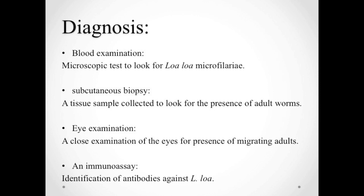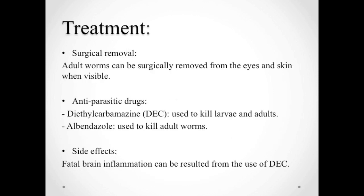This disease can be diagnosed through blood tests for microfilaria, which have also been found in urine, sputum, and spinal fluids. The blood sample needs to be taken during the day when the microfilaria are traveling in the bloodstream. According to some estimates, 30% of patients do not have microfilaria in their bloodstream, or have such small quantities that they are rarely seen in microscopic examinations. Therefore, other diagnosing methods include subcutaneous biopsy to examine for the presence of adult worms, eye examination to look for migrating adults, and an immunoassay to identify antibodies present against the parasitic worm.